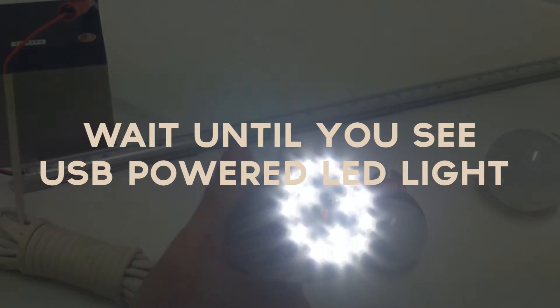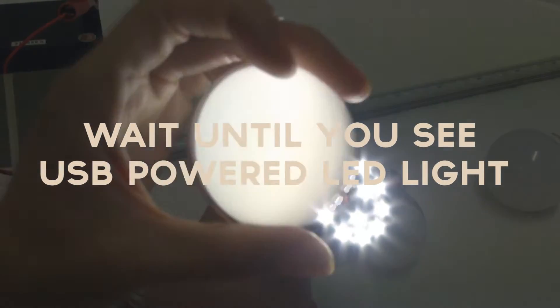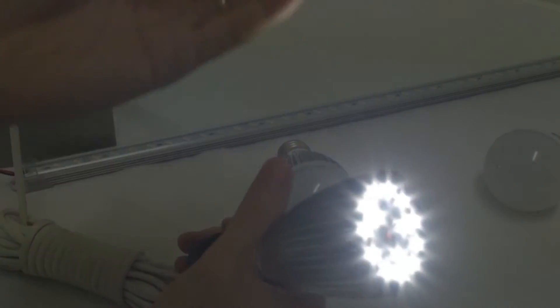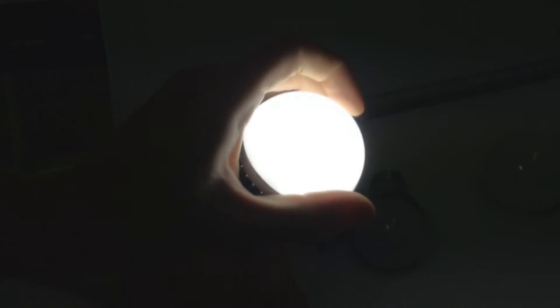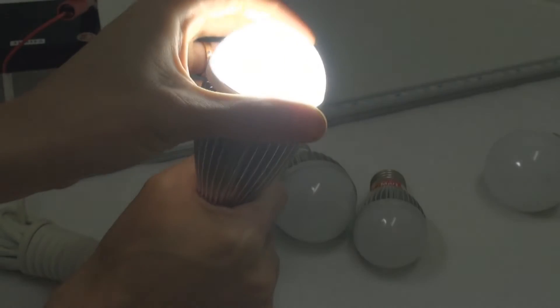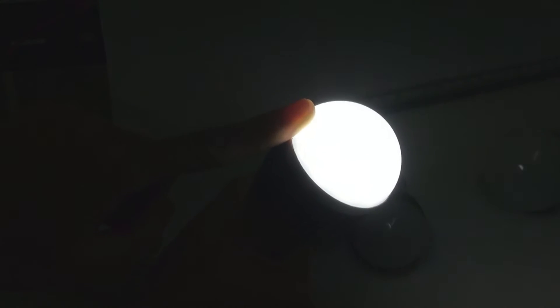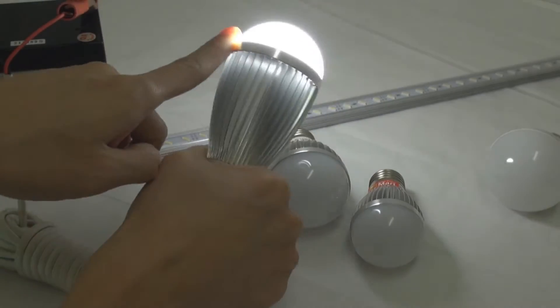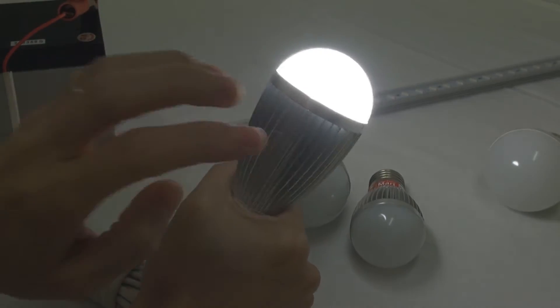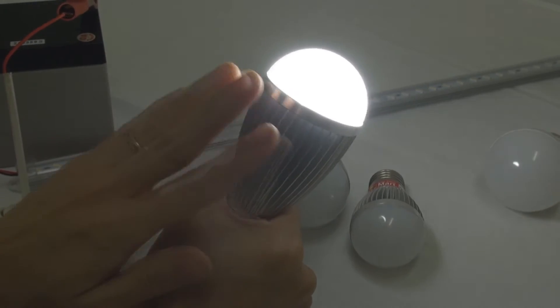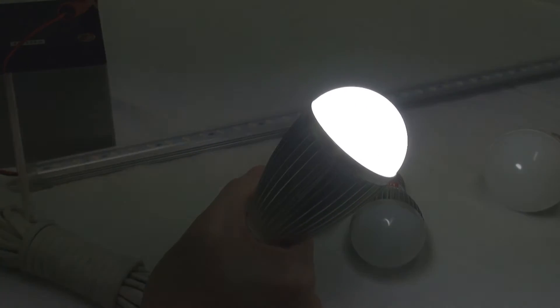If you want even brighter, you can remove the frosted casing, but I would not recommend that because it hurts the eyes, it's too bright. When you have the frosted casing on, the light distribution is much better. Aluminum casing, when it gets hot, the heat will be distributed well.